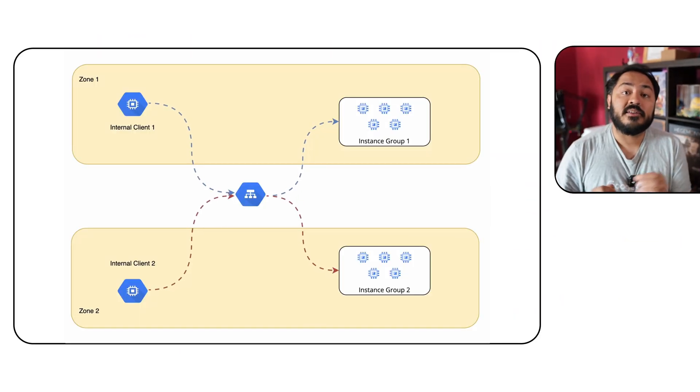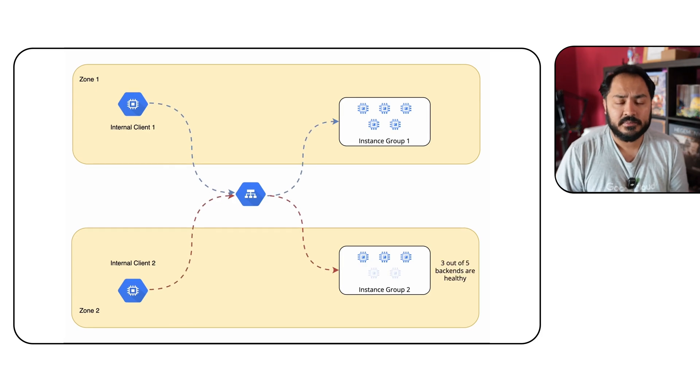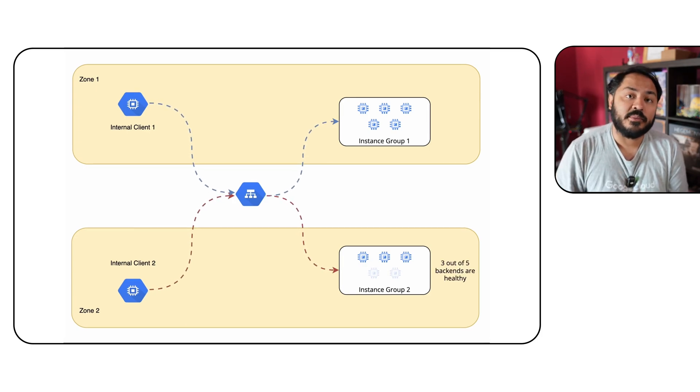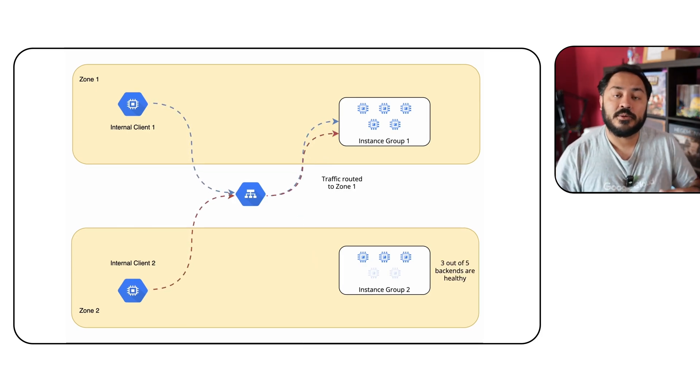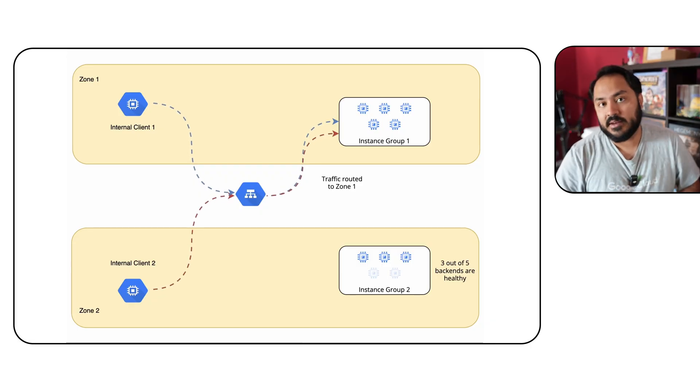Next up, we have some great networking enhancements. First is the preview for zonal affinity for L4 ILB services. This feature prioritizes routing traffic to the same zone as the request's origin. If no healthy backend is available, the request automatically fails over to other regions to ensure high availability.